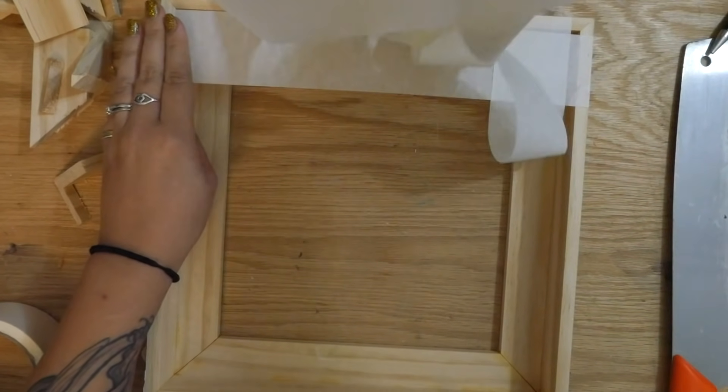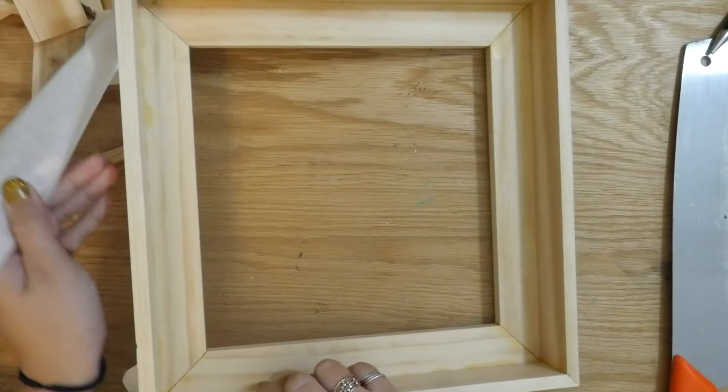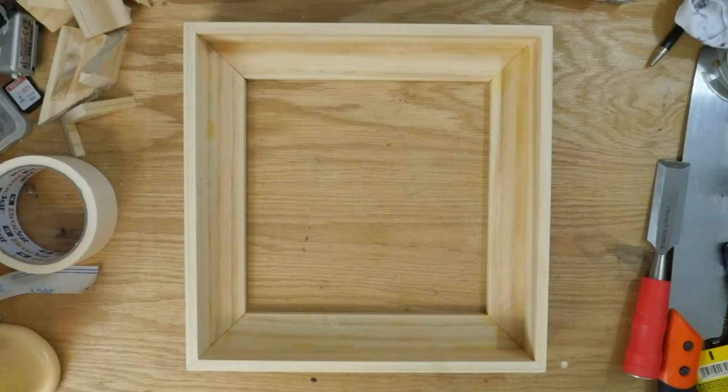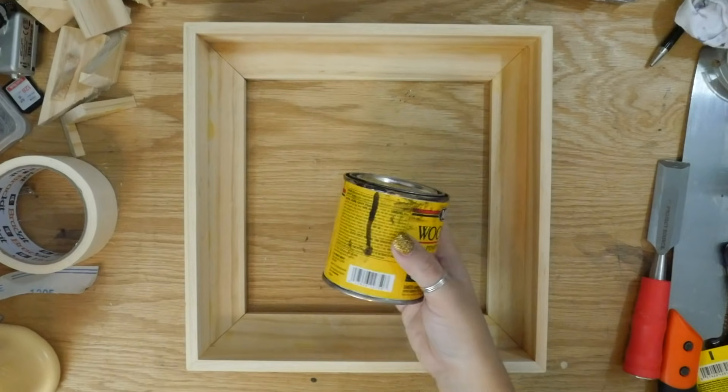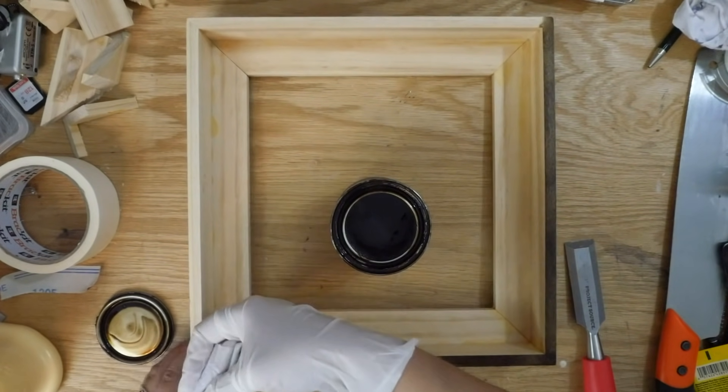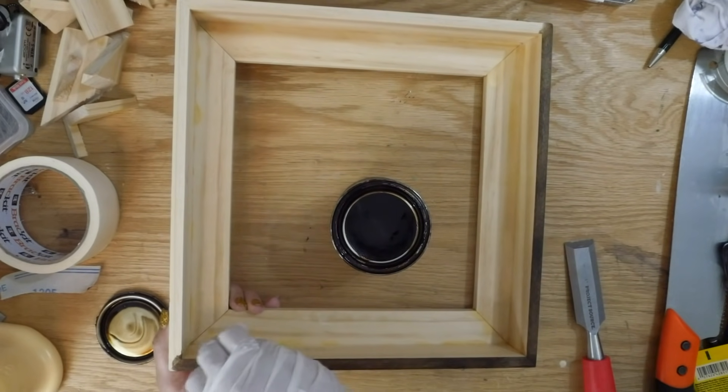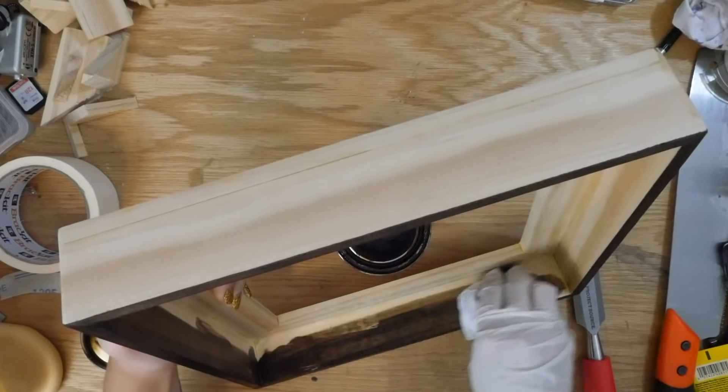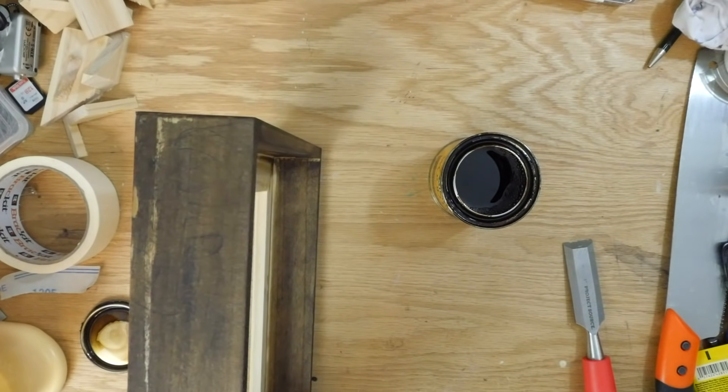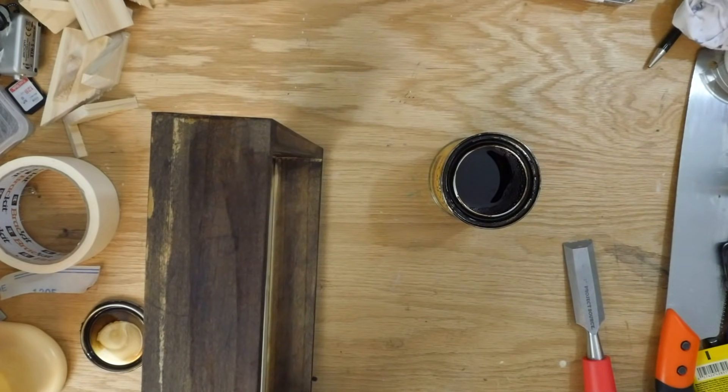Remove the clamps or tape or whatever you use to hold it together and then sand, sand, sand. Wipe the dust off and then finish the frame however you see fit. Initially, I stained this frame with a dark color, but I didn't do a good enough job cleaning off the wood glue and then sanding it off, so you can clearly see those spots after I stained it. I ended up going back and painting it off camera.